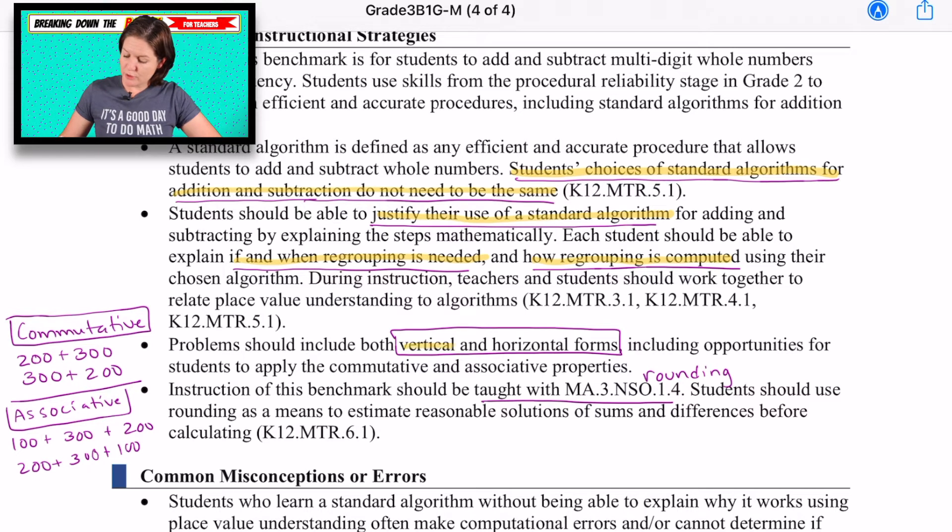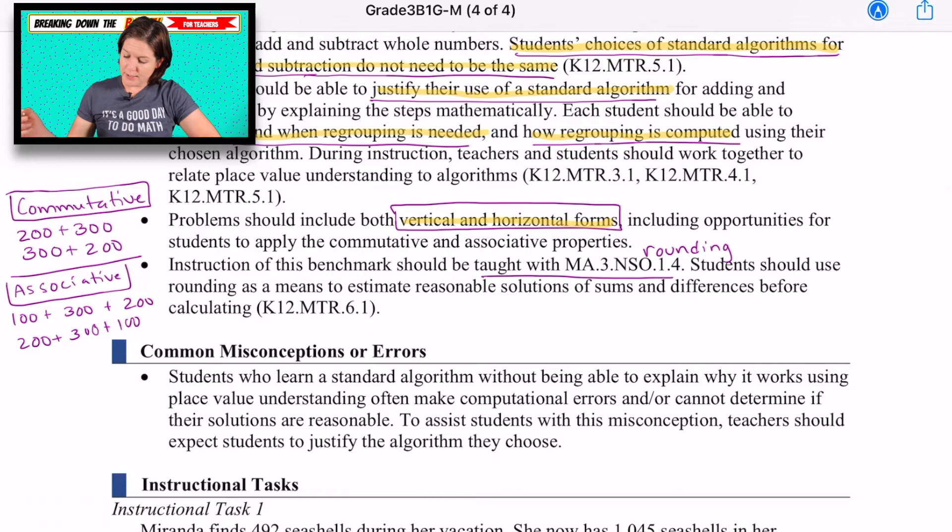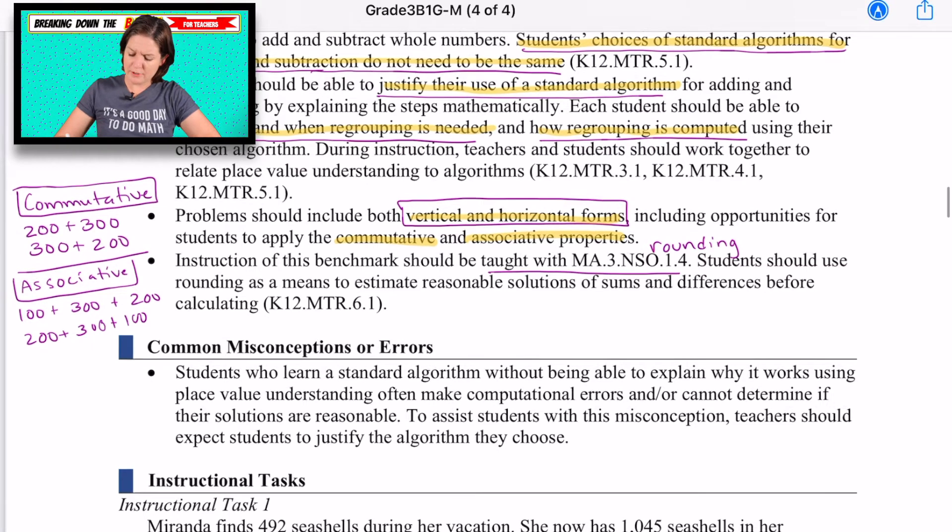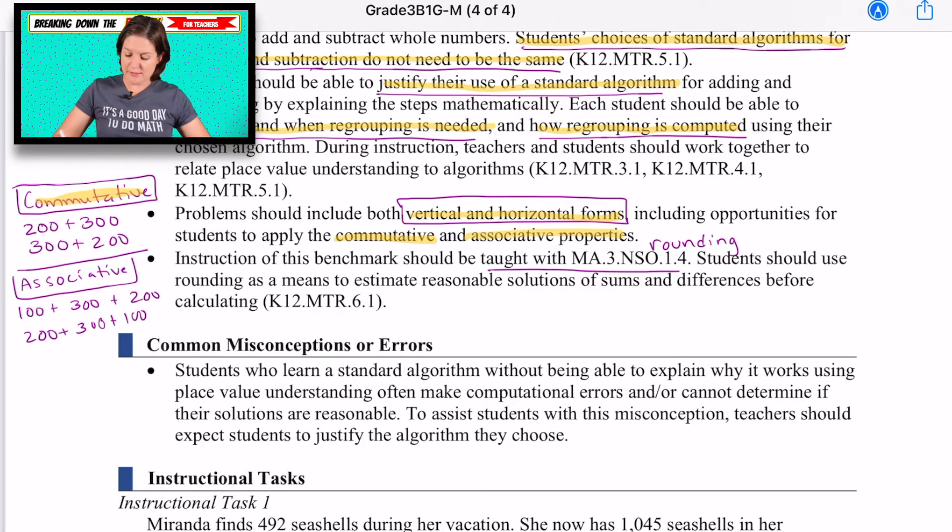Something else that jumped out at me was vertical and horizontal form. So they might see it horizontally. They might see it vertically. But most of the times I do recommend that you transfer a horizontal form into a vertical form to add them up. It does make it more simple in my opinion. And that gives opportunities for the commutative and associative properties. I made a note over here that commutative is when you're switching the order of your addends like 200 plus 300 is going to have the same value as 300 plus 200. It doesn't matter the order that you go. So associative is similar to commutative. You just have more addends. So like 100 plus 300 plus 200 would get you the same value as 200 plus 300 plus 100. Just switching up the order.